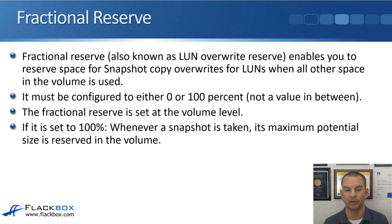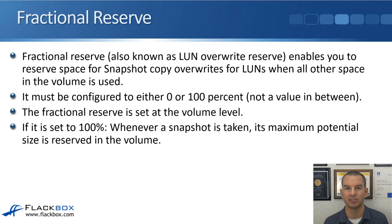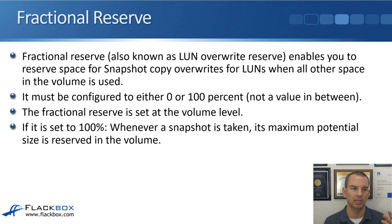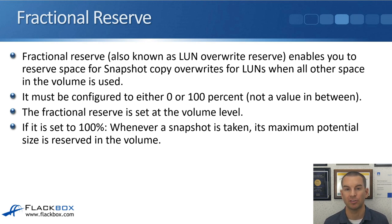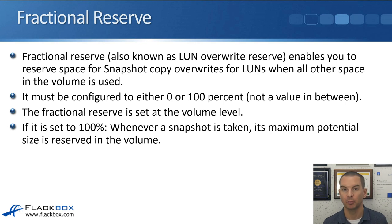The fractional reserve must be configured to either 0 or 100% — not a value in between — so it's essentially on or off. In previous versions of ONTAP you could set it to values between 0 and 100%, which is why the command is still configured as a percent, but in the latest versions of ONTAP it must be 0 or 100. The fractional reserve is set at the volume level, not the LUN level. If set to 100%, whenever a snapshot is taken, its maximum potential size is reserved in the volume.